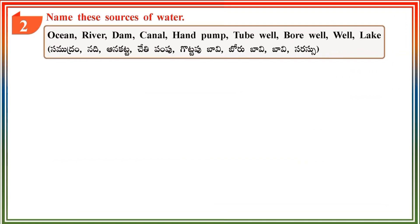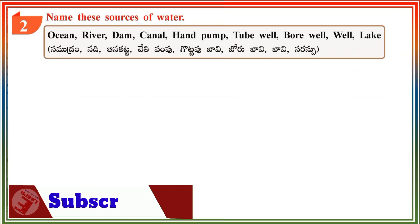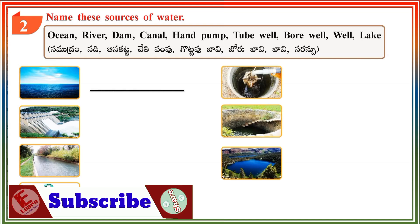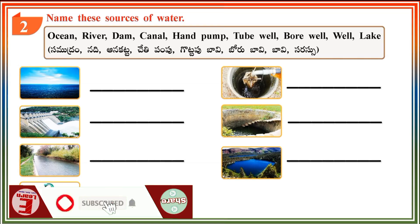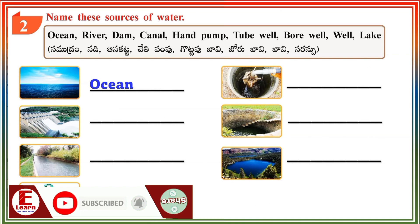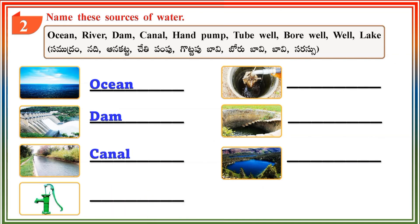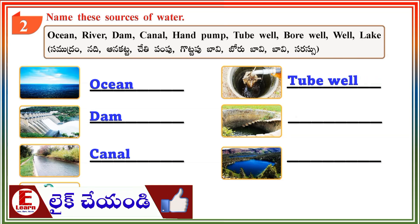Section 2: Name these sources of water. Ocean. Dam. Canal. Hand Pump. Tube Well. Well. Lake.